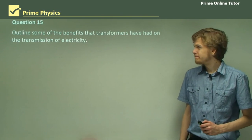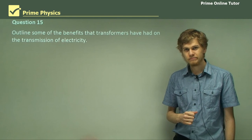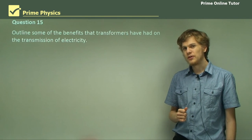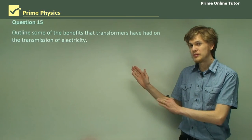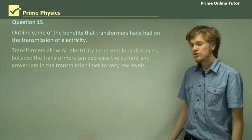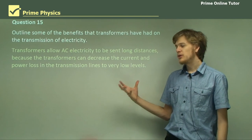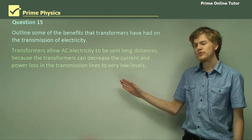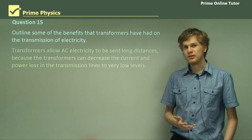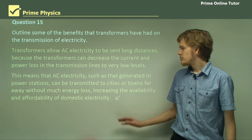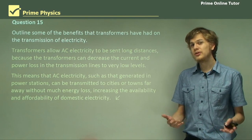Question 15. Outline some of the benefits that transformers have had on the transmission of electricity. Well, I'm sure there should be one that's fairly obvious. We lose less power when we transmit stuff using transformers. Transformers allow AC electricity to be sent long distances, because the transformers can decrease the current and decrease the power loss in transmission to very low levels, even if the resistance of the wire is significant. So AC electricity, such as that generated in power stations, is far more useful than, for example, DC electricity.